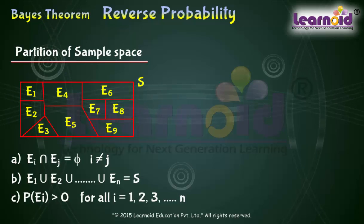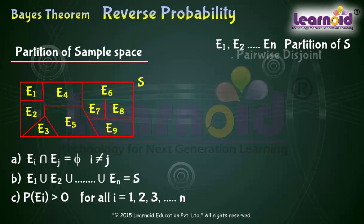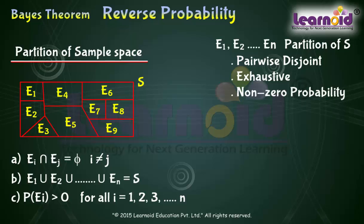In nutshell, we can say that the events E1, E2, and so on up to EN represent a partition of the sample space S if they are pairwise disjoint, exhaustive, and have non-zero probabilities.